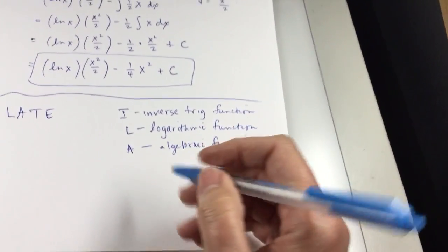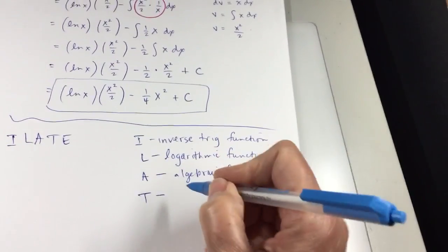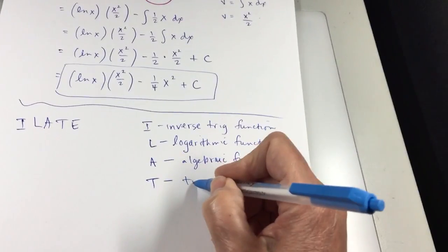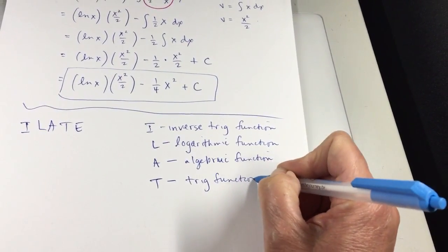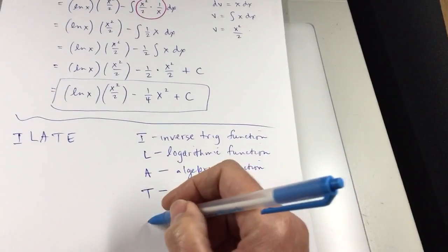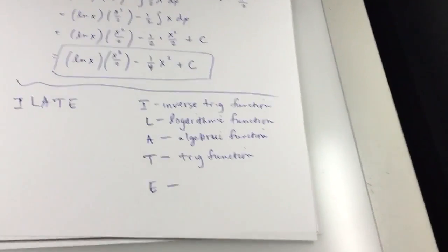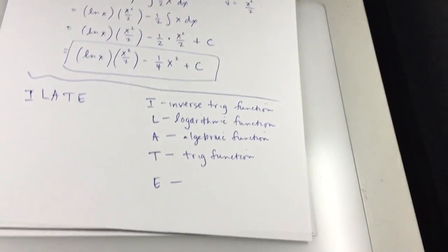The T is trig function. Once you come down the list and you hit that type of function in the problem, you've identified U. Everything else is DV. You don't go through the list until the end.